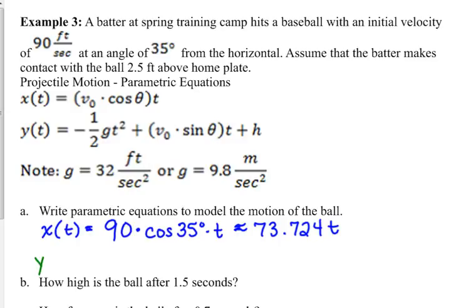The vertical part, the y(t), is equal to negative 1.5. What are we going to use for g, 32 or 9.8? 32, because our velocity is in feet per second, so we're going to use the feet per second squared for the g. That's times t squared, plus the initial velocity again, 90. This time it's the sine of the angle, times t, plus 2.5.